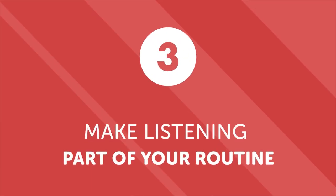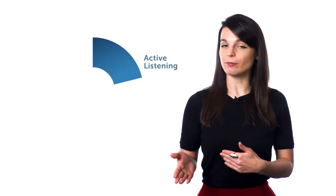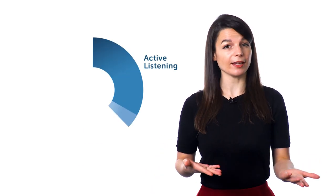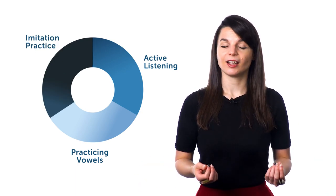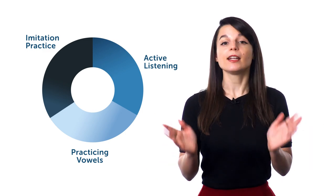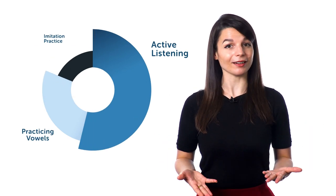Number three: make listening part of your routine. Now that you've started practicing active listening and pronunciation, make it a part of your regular learning. Allot a specific amount of time for each of your listening activities. For example, you might practice 10 minutes of active listening, followed by 10 minutes of practicing vowels, and then 10 minutes of imitation practice with a podcast. You don't have to use this schedule exactly — tailor it to your own needs and availability. The point is to make a conscious and decisive effort to practice your listening skills regularly. It could be 30 minutes a day, or it might be 10. What matters most is that you practice consistently.